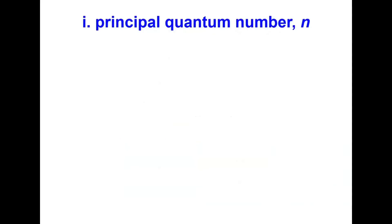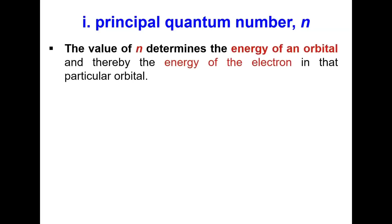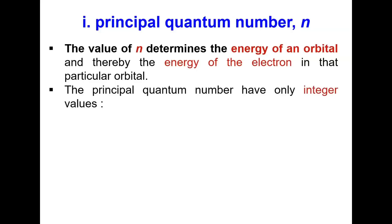The first quantum number is the principal quantum number N. The value of N determines the energy of an orbital and thereby the energy of the electron in that particular orbital. The principal quantum number has only integer values — N starts with 1, 2, 3, and so on up to infinity.